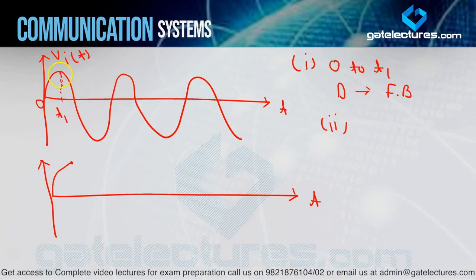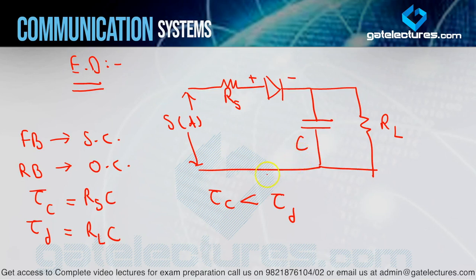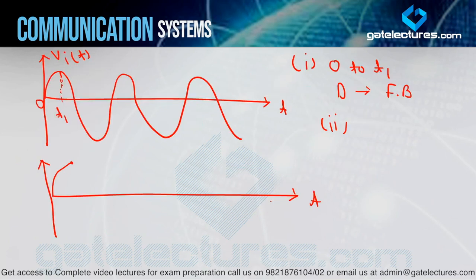After the maximum value, the input starts decreasing. When input decreases, the diode becomes reverse biased and the capacitor starts discharging. Now an important conclusion from the last slide: the charging time constant is less than the discharging time constant, meaning the discharging time constant is much greater — so discharge happens very slowly with respect to time. So the capacitor only partially discharges — it cannot completely discharge because it is very slow.